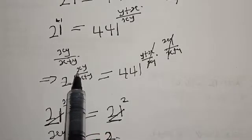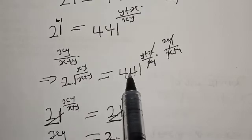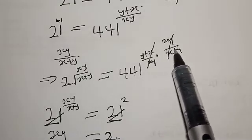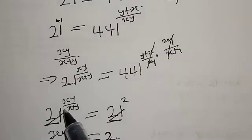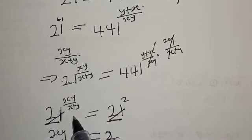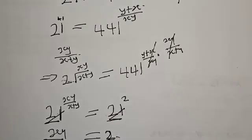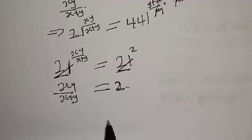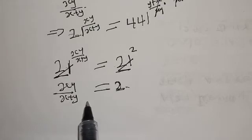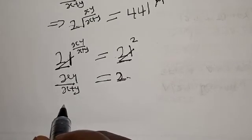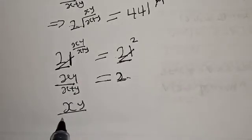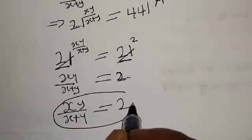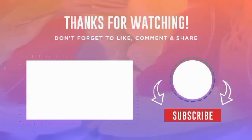From 21 raised to power x·y over x plus y equal to 441, multiplying the exponent by x plus y over x·y and then by x·y over x plus y cancels out, leaving 21 raised to power x·y over x plus y equal to 21 squared, because 441 is the same as 21 squared. Therefore, our final answer is x·y over x plus y equal to 2. Please don't forget to like, share, comment, and subscribe to the channel. Thank you.